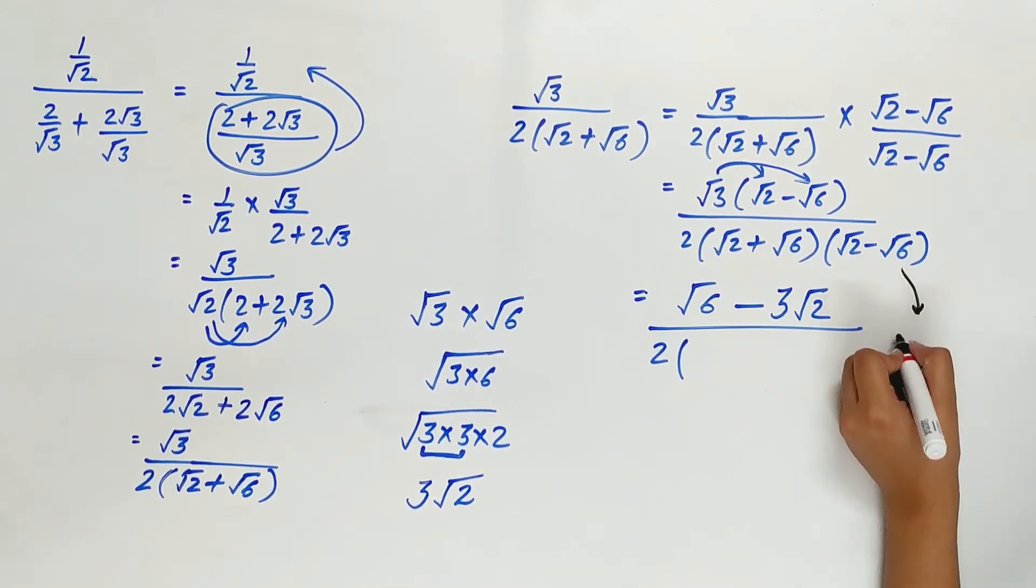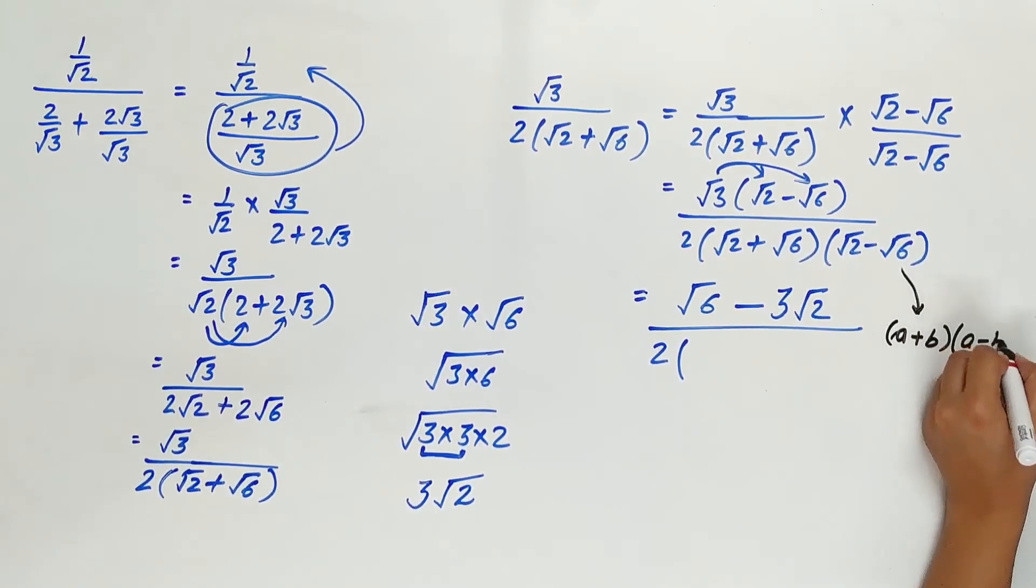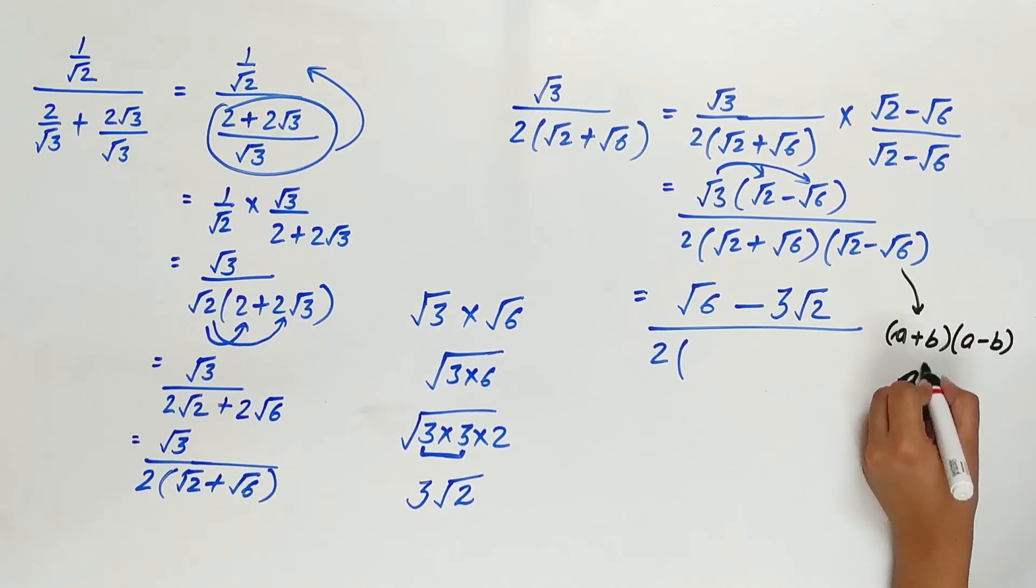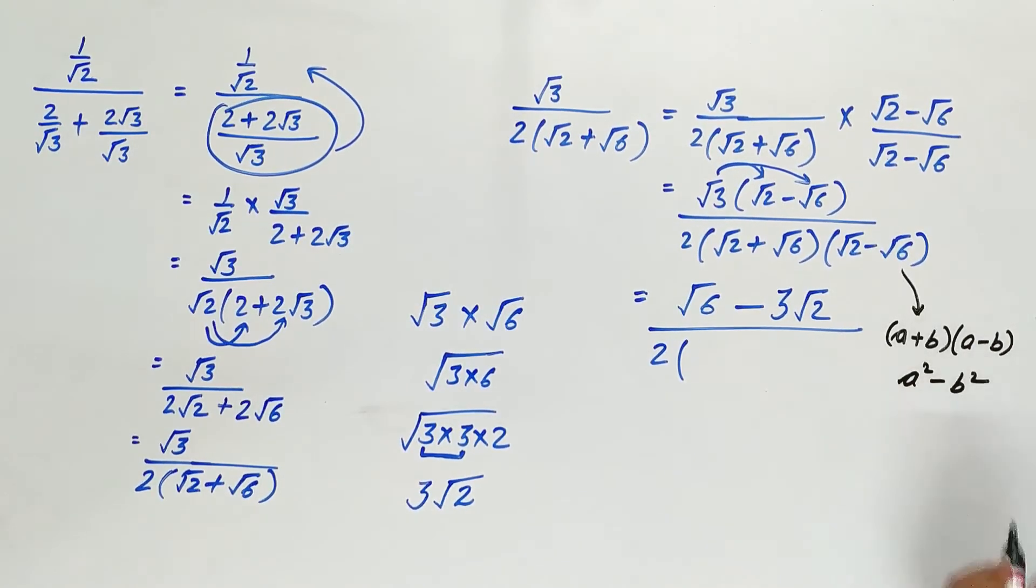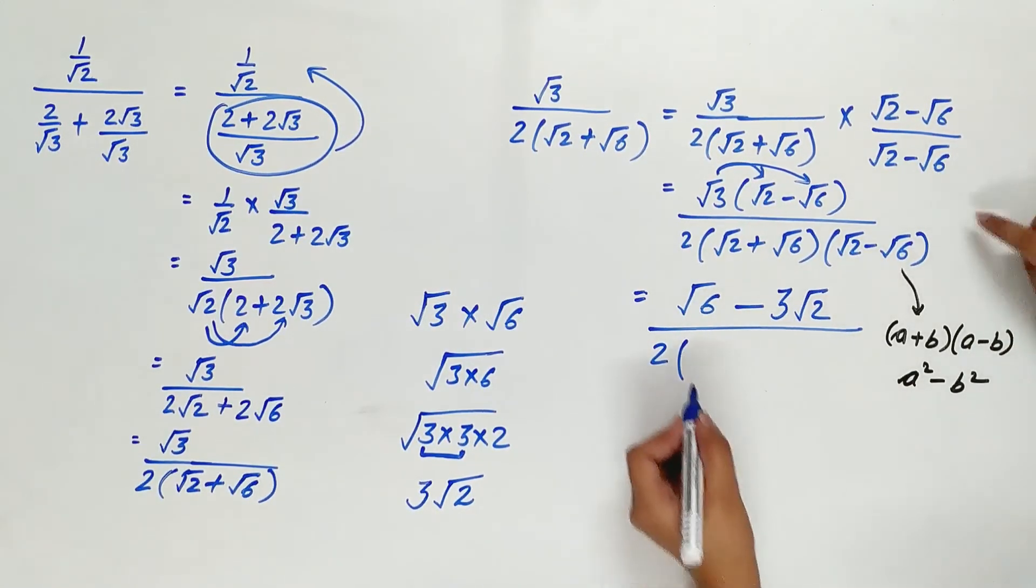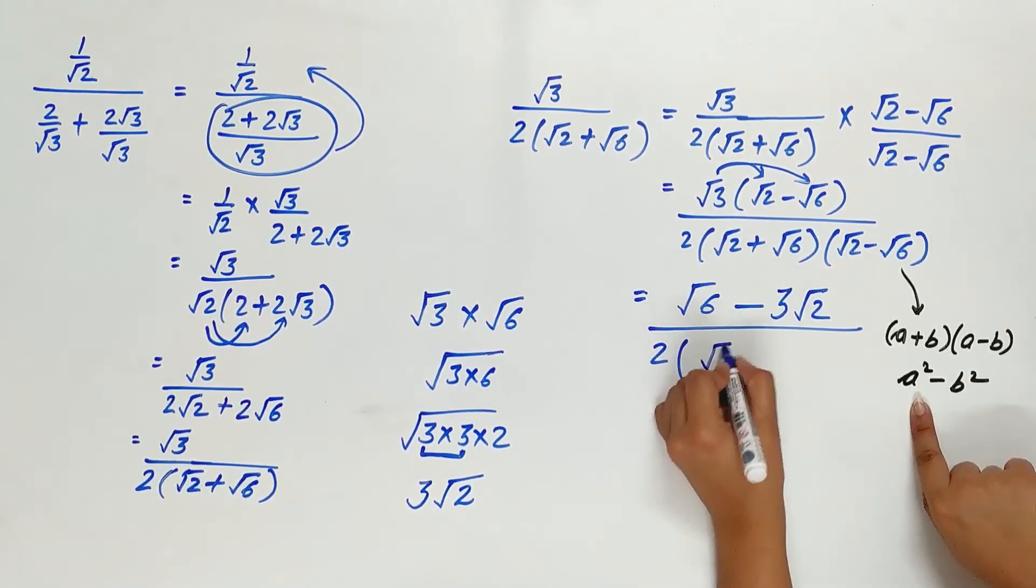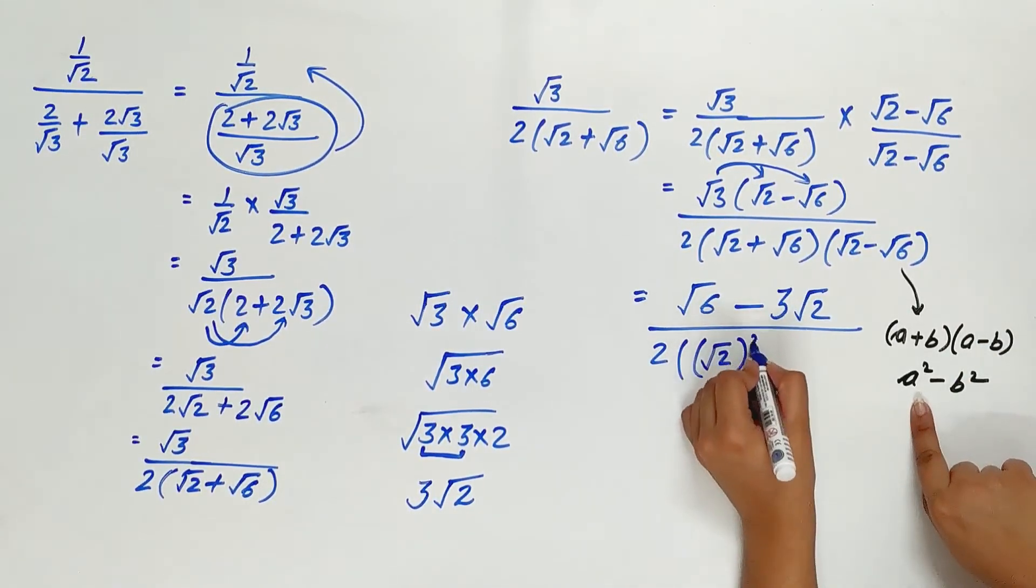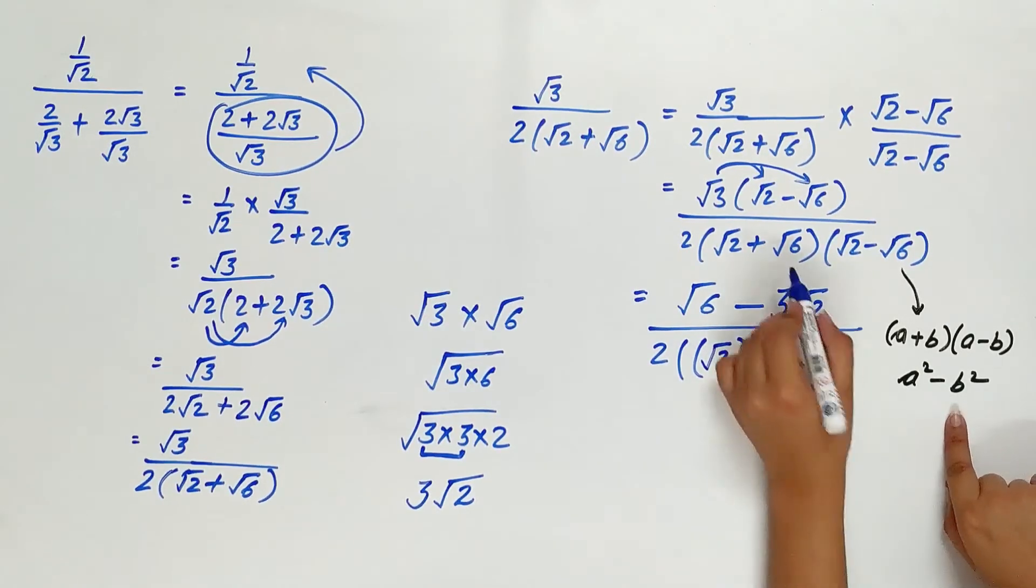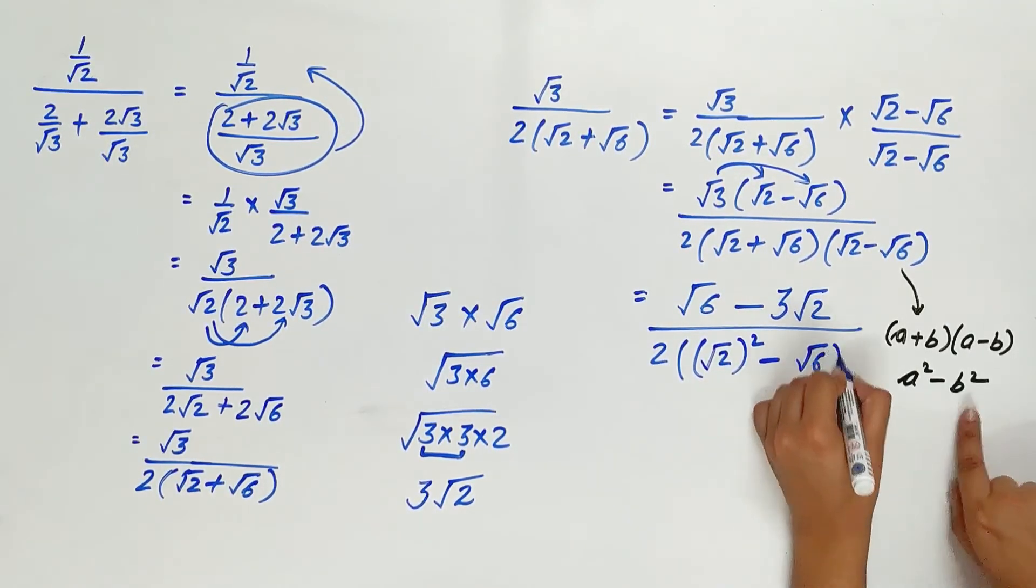If you remember the identity, a plus b multiplied by a minus b is equal to a square minus b square. We will apply the identity. A is root 2, b is root 6.